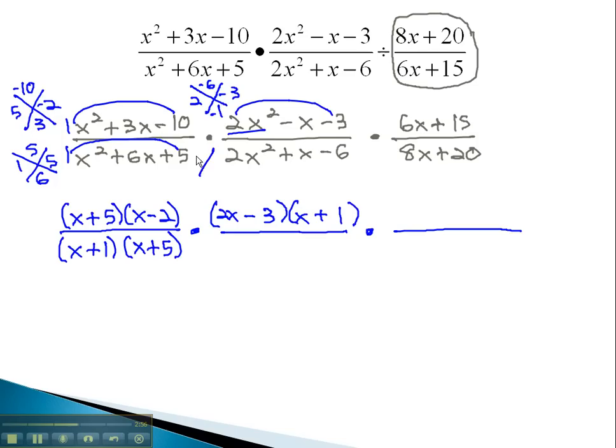In the denominator, we can factor it as well using the ac method, multiplying to negative 12 and adding to 1. This is done with 4 and negative 3. Again, we will be careful with our factors, as we have something in front of x squared. The only way to get 2x squared is 2x times x, which means 2x had to be multiplied by something to get 4. 2x times 2 is 4. In the center, the x was multiplied by something to get negative 3. Must be negative 3.